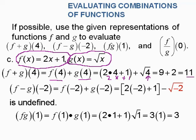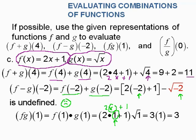For f minus g of negative 2, written as f of negative 2 minus g of negative 2: we can plug negative 2 into f of x and get 2 times negative 2 plus 1, which comes out fine. But when we put negative 2 into the square root in g of x, that's undefined. For f times g of 1: f of 1 is 2 times 1 plus 1, g of 1 is the square root of 1, giving us 3 times 1, which is 3.